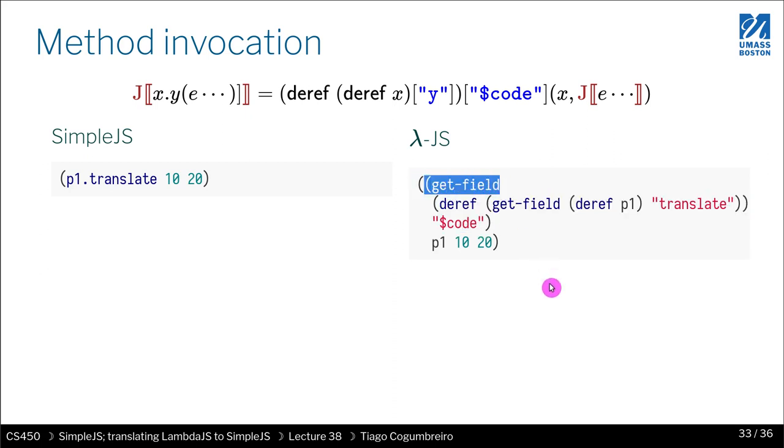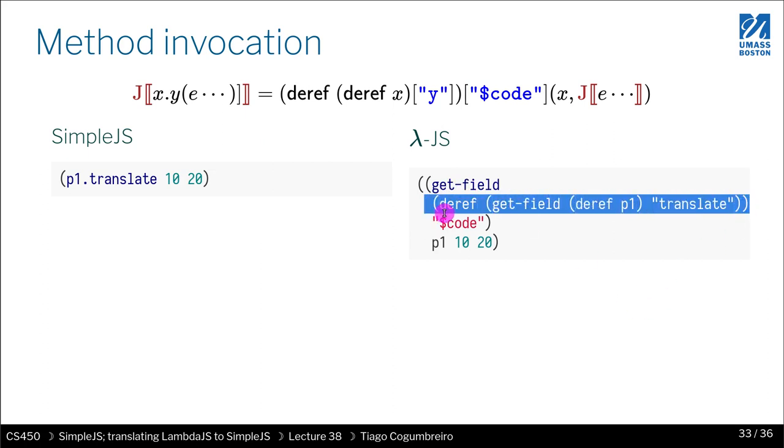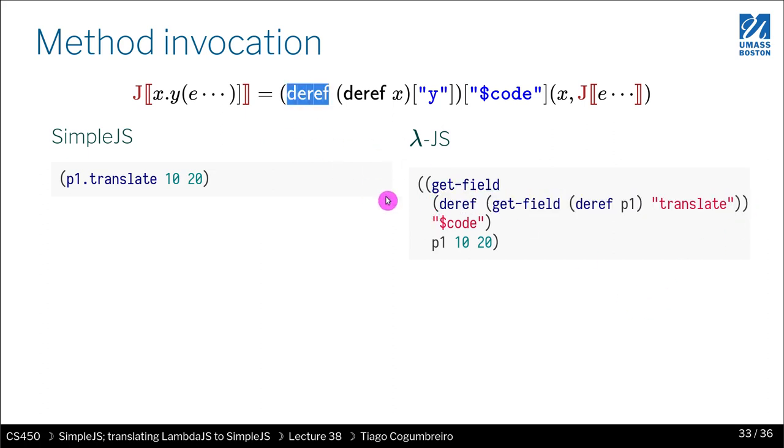Outermost, a get field, which corresponds to this whole thing. Get field of code. So code is here. So what is the object that we're getting? The object is going to be this whole thing in blue. So now what do we see? We see outermost a deref. And then inside, what do we have? We have this. So we have a get field. And then inside of the get field, what is the object that we do get the field from? Is the deref. So we do deref of P1.